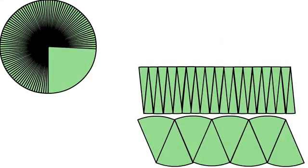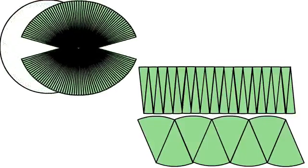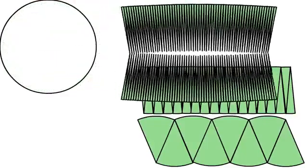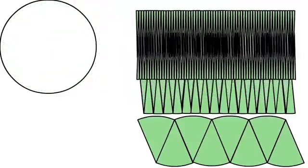If we divide the circle into even smaller pieces, you can see that every time the shape becomes more like a rectangle.